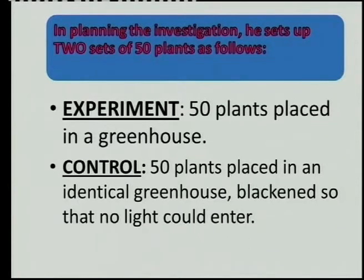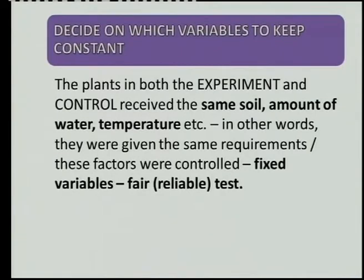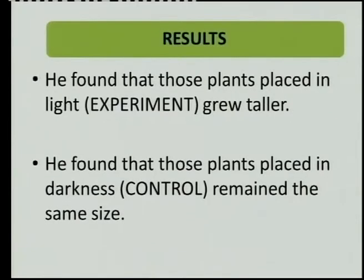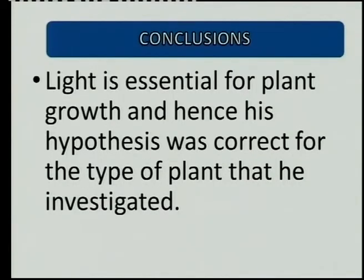He put the plants in the greenhouse. The experiment tests whether light is necessary, so the control must be the one that takes the light away. The fixed variables — same soil, same amount of water, temperature, etc. — to make it a fair and reliable test. He recorded the results, measuring the length of aerial plants above the ground, put it in a table, and did line graphs. The results showed that in the light they grew taller, while in the control — in the darkness — they remained the same size.